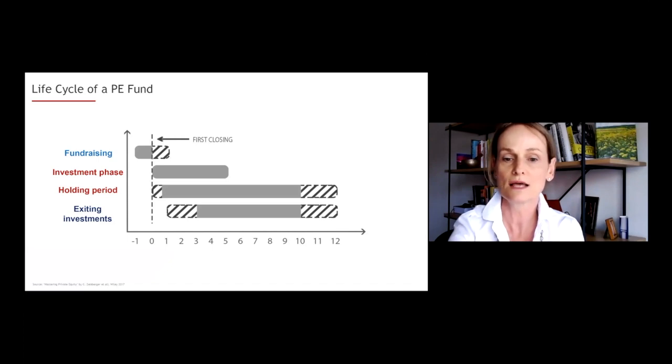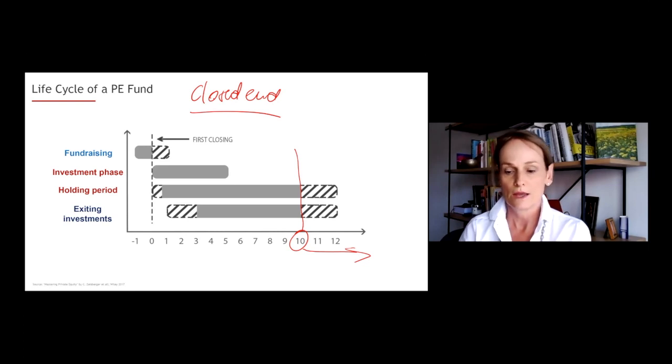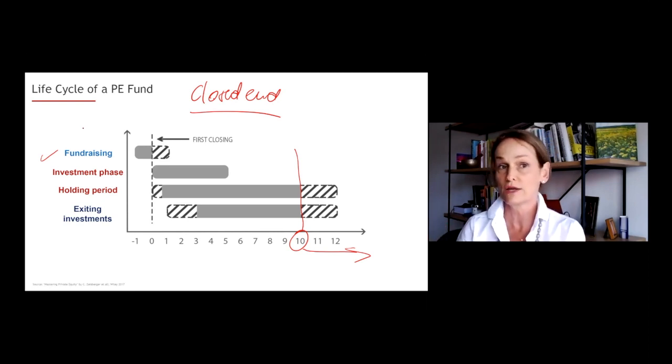So let's have a look at the life cycle of a private equity fund. Private equity funds are what we call closed-end funds. What does that mean? That means they have a finite life, usually up to 10 years, but at times they have the right to extend their lifespan by another two years. So every private equity fund starts off with a fundraising period. Once the first closing has been achieved, meaning at least 60 to 70 percent of the fund has been raised, sometimes 50 percent,